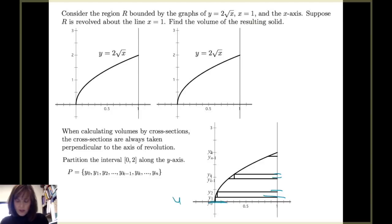So I'm going to have my partition at y₀, y₁, y₂. Here's y_{k-1} and y_k up through y_n, which is at 2 in this case.